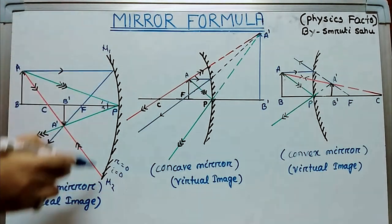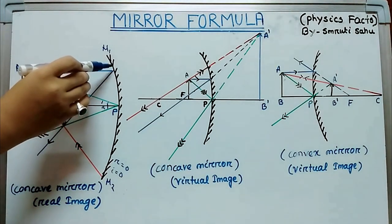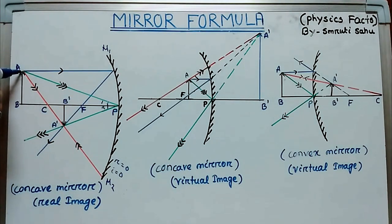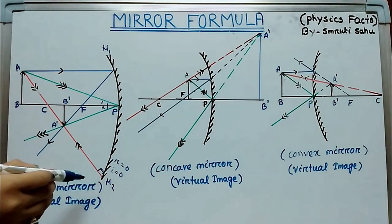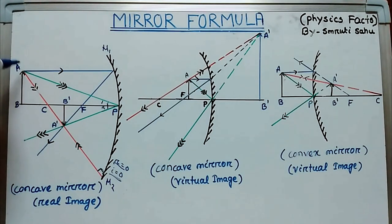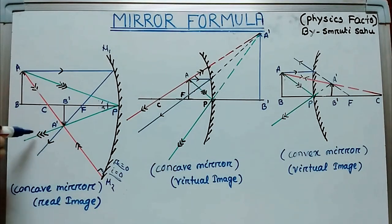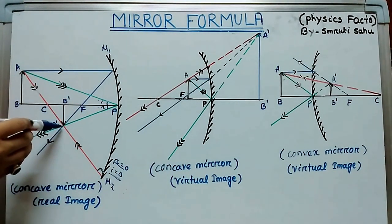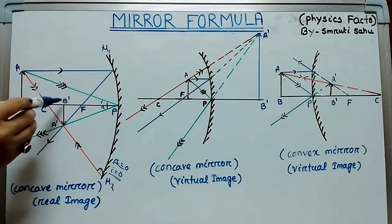Consider mirror M1M2, where the object is placed beyond C. To find the image, we consider three incident rays. The first ray is parallel to the principal axis and after reflection goes through the focus. Another incident ray goes through the centre of curvature and after reflection retraces its path, because at this point the angle of incidence is zero, so the angle of reflection is also zero. The third incident ray passes through the pole and obeys the laws of reflection. These three reflected rays meet at a point where the image is formed, between the centre of curvature and the focus, in front of the mirror. This image is a real image.